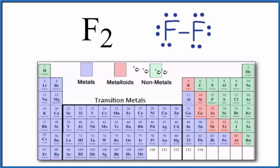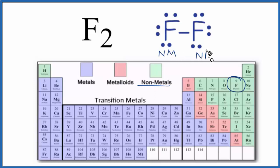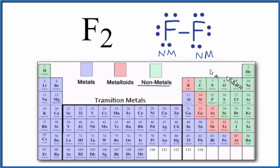As we look at the periodic table, right here is fluorine — that's a nonmetal. So we have two fluorine atoms; they're both nonmetals and the same element. Nonmetal plus a nonmetal gives us a covalent compound. So according to the periodic table, we have a covalent compound.